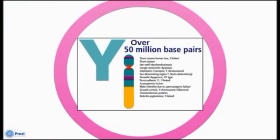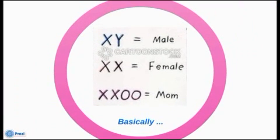In humans, the Y chromosome spans about 58 million base pairs, which are the building blocks of DNA. This represents approximately 2% of the total DNA found in humans. The human Y chromosome contains 86 genes, which code for only 23 distinct proteins.